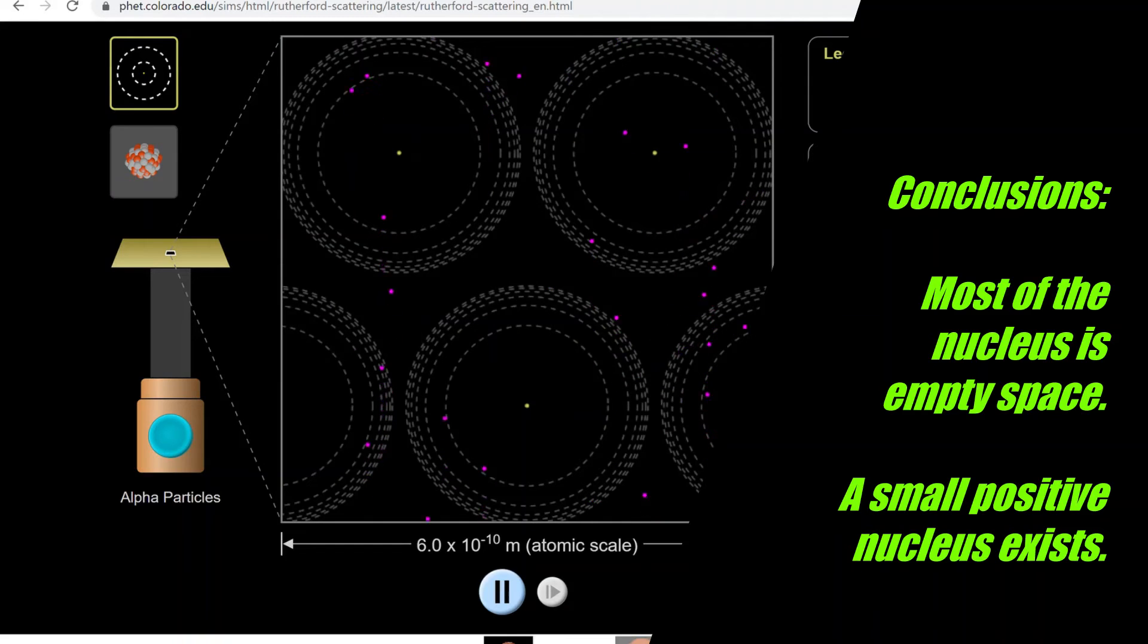Additionally, because very few of the particles, about 1 in 10,000 or so, were scattered at a large angle, this means that a small but positive nucleus exists. And a large scattering at a large angle occurs whenever an alpha particle comes close to the nucleus. And in fact, this is where most of the mass and additionally the positive charge will have to be concentrated. Remember, alpha particles are positive, so they're going to repel if they're near the positive nucleus.